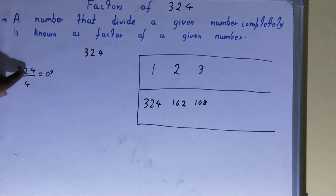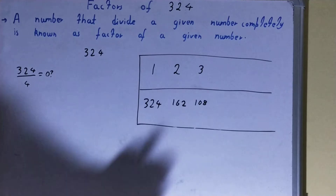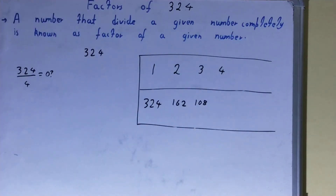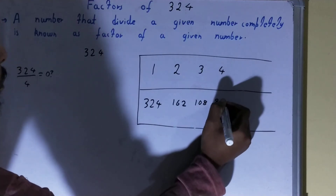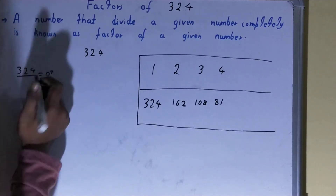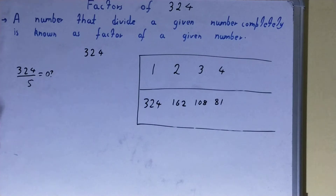After 3, we check with 4. 324 is clearly divisible by 4: 4 × 81 = 324, remainder is zero. So 4 is a factor, and 81 will also be a factor.